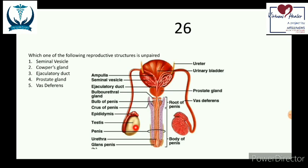The testis is unique because it is the only organ that exists outside the abdominal cavity. It is paired and oval shaped. Its function is production of sperm as well as production of testosterone. The sperm is passed into the coiled tube that lies above the testis, known as the epididymis.